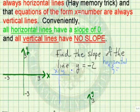If x is 0, y is negative 2. Let's create a table of values. If x is 2, y is negative 2. If x is negative 2, y is negative 2. So let's plot these points.